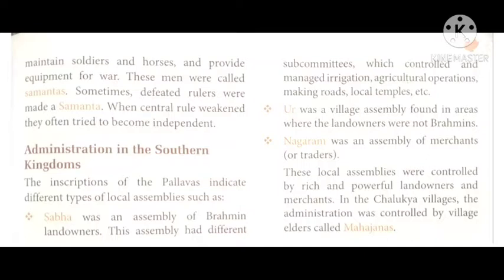The next assembly was Ur. Ur was a village assembly found in areas where the landowners were not Brahmins. Where the landowners were not Brahmins, there was this assembly called Ur. There was also Nagaram, which was an assembly of merchants.